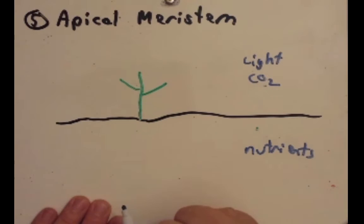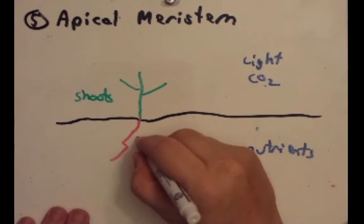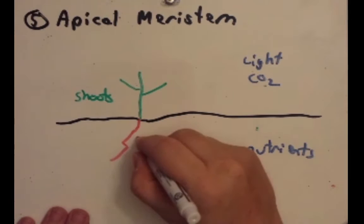So we call these shoots. The shoots would move up, and the roots would move down to get to the nutrients. But remember, the plant can't move. So if it doesn't find any nutrients here, or there's a shade here, the plant has to be able to grow in order to get to this increased sunlight, or to get to the nutrients down here.